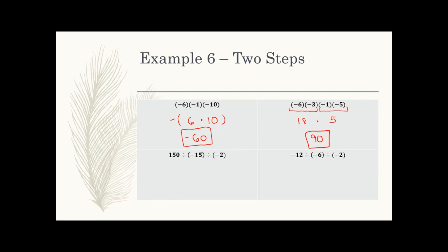Bottom left: 150 divided by negative 15 divided by negative 2. Two negative signs — even — so the answer will be positive. Working left to right: first, 150 divided by negative 15 — positive and negative gives negative — and 150 divided by 15 is 10, so I get negative 10. Then negative 10 divided by negative 2 — two negatives give a positive — and 10 divided by 2 is 5. So the answer is positive 5, which matches our rule of an even number of negatives.